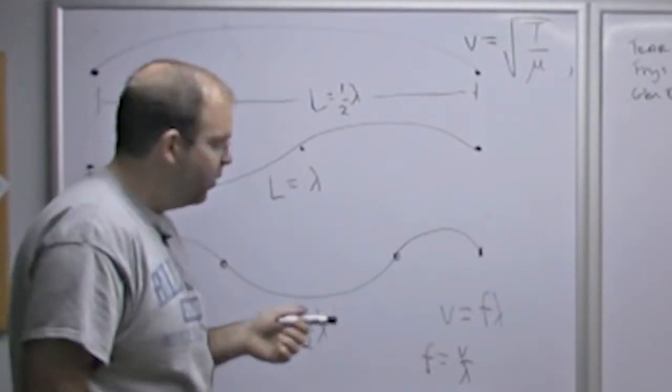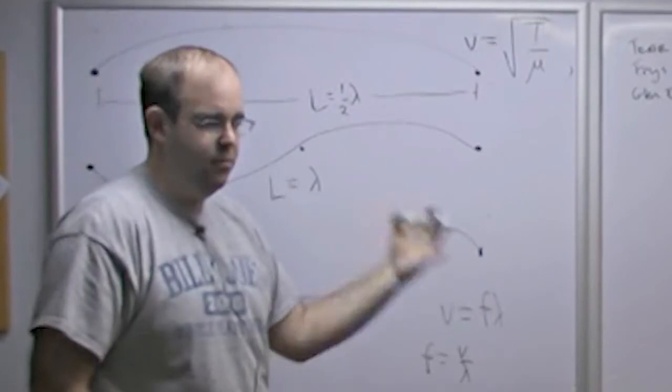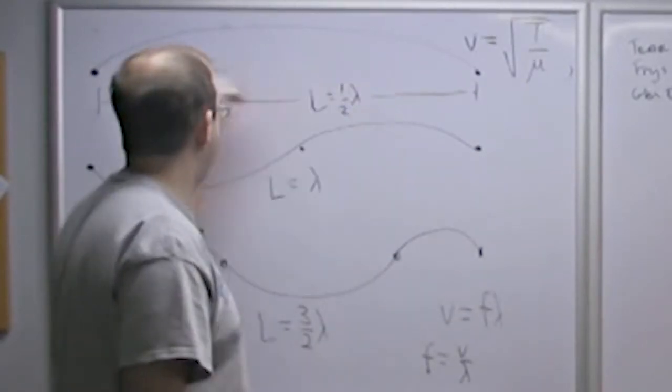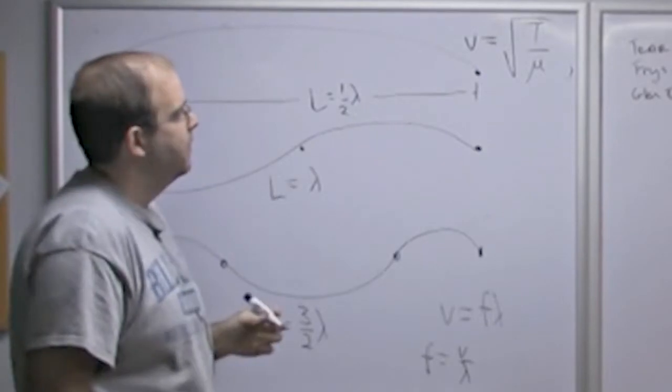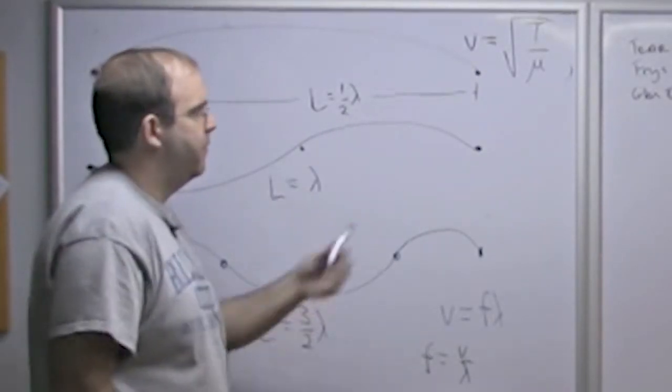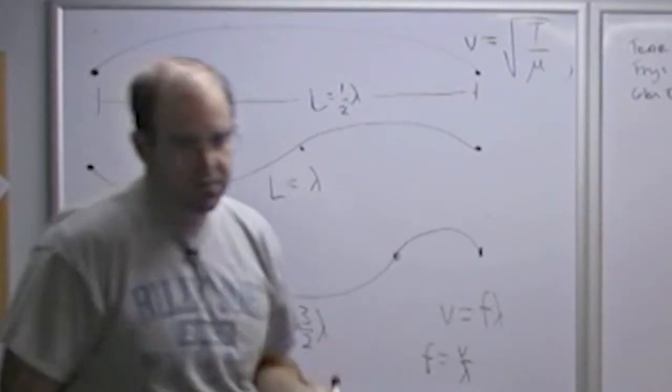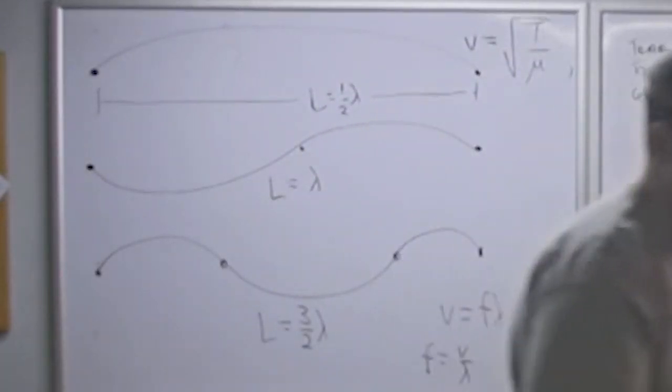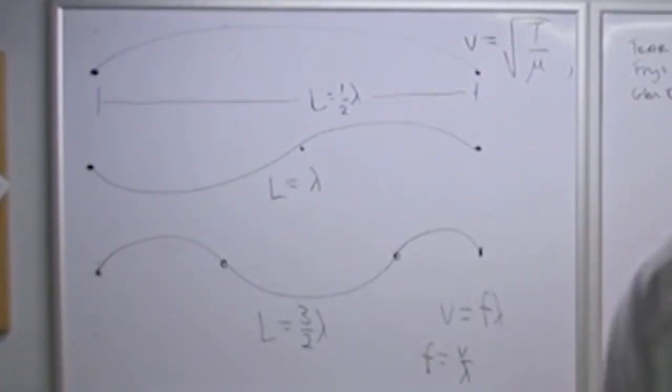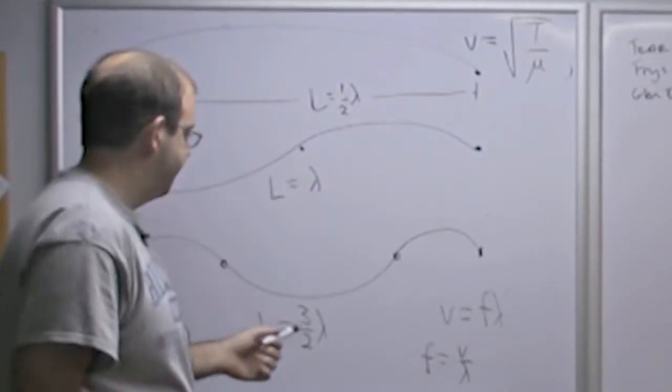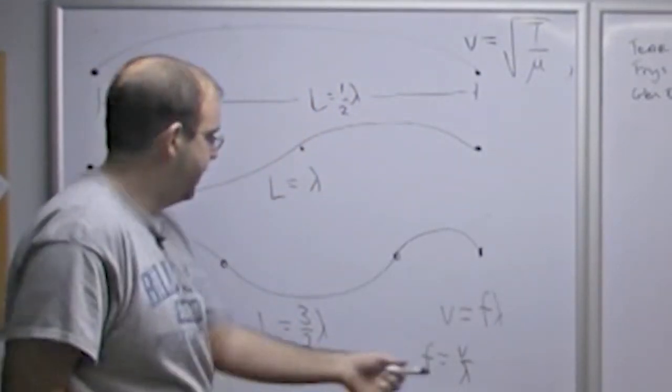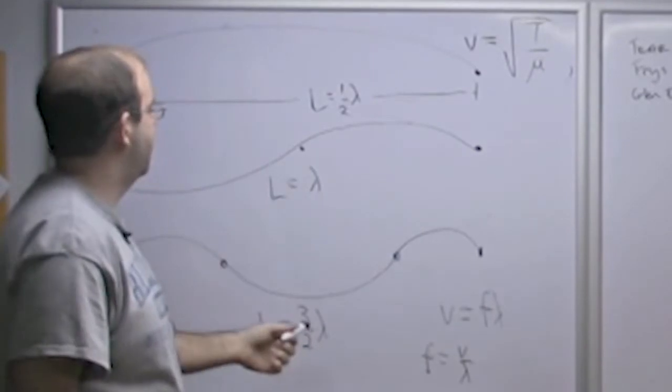V is equal to square root of the tension divided by the linear mass density, which is the mass per unit length. So if you know those two things, you can find out what V is. We'll assume that we can calculate that or that somehow we know that for any string if we really want that.